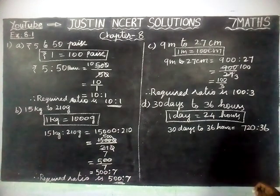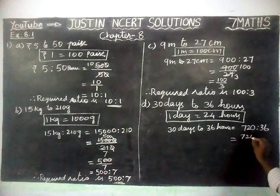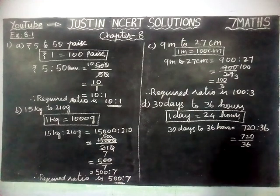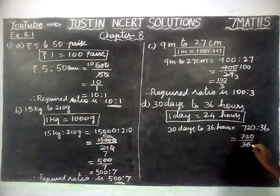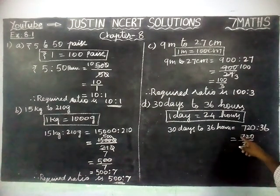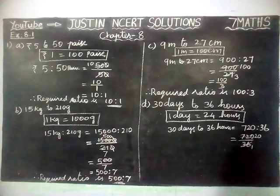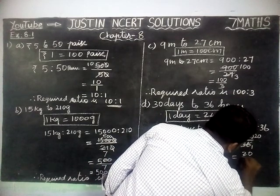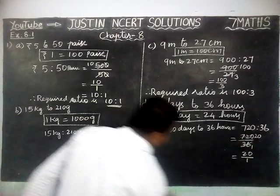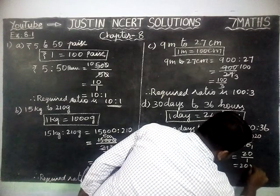So 720 is to 36. Now we are going to divide it. 720 divided by 36. We can simplify by 36 itself: 1 times 36 is 36, 2 times 36 is 72, and 20 times 36 is 720. So we get 20 divided by 1, which can be written as 20 is to 1.